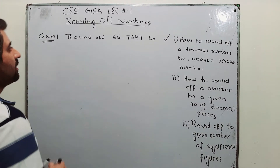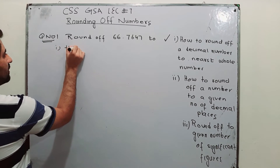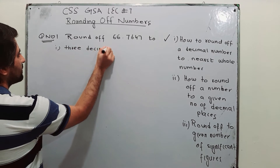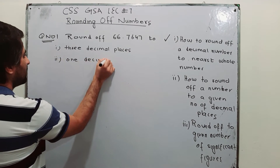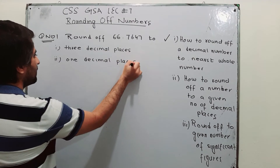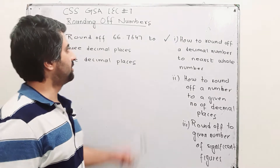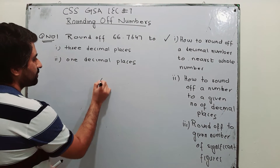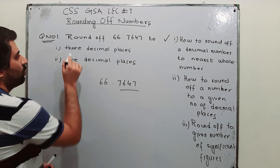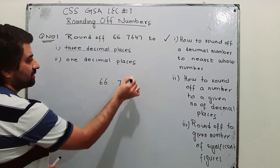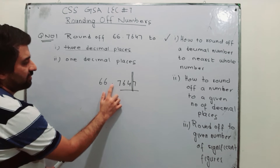Round off 66.7647 — part 1: to 3 decimal places, and part 2: to 1 decimal place. We have 4 digits after the decimal point in 66.7647. When we have to restrict it to 3 decimal places, we mark a line where we have the 3rd decimal place — that is the 1st, 2nd, and 3rd digit after the decimal.